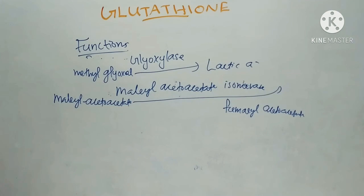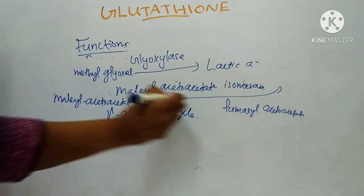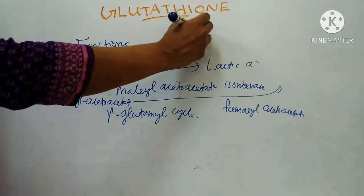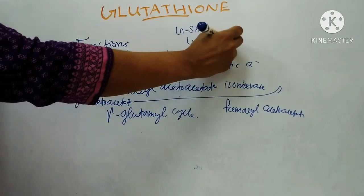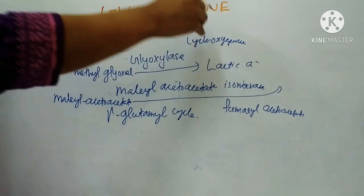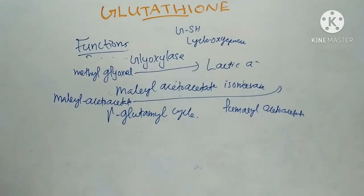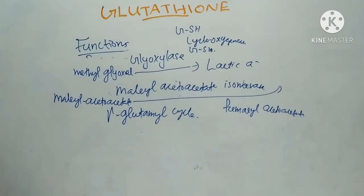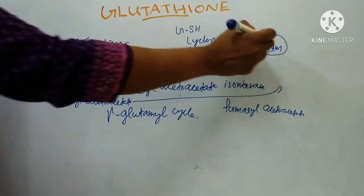Glutathione also takes part in the gamma-glutamyl cycle for the absorption of amino acids from the gut. Reduced glutathione, GSH, is required as a co-factor with prostaglandin synthetase — that is cyclooxygenase — required for the formation of endoperoxides from arachidonate in prostaglandin synthesis. GSH is also required for the activation of methionine to S-adenosyl methionine, which is active methionine.